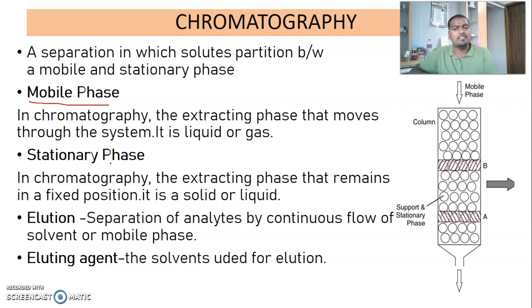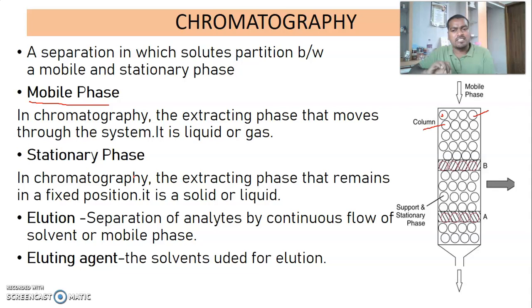When we come to the stationary phase, as the name tells, it is static — fixed at a position in the chromatography column. Consider a burette-like structure: inside it you can find spherical ball-like structures. These spherical balls are fixed in the chromatography column, and in the interstitial region between them, the mobile phase is moving. So the stationary phase is a phase that remains fixed in the chromatographic column, while the mobile phase moves through the system. The stationary phase is either a solid or liquid in its physical state.